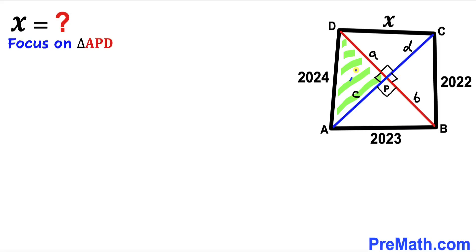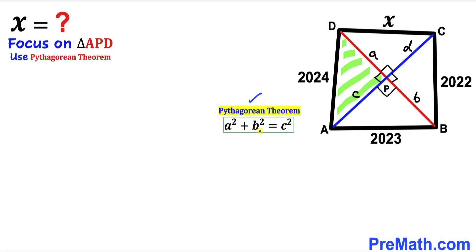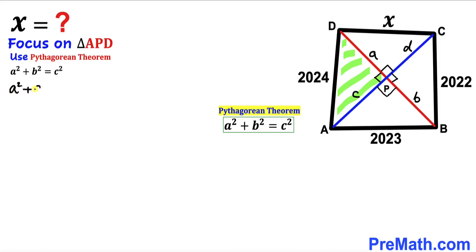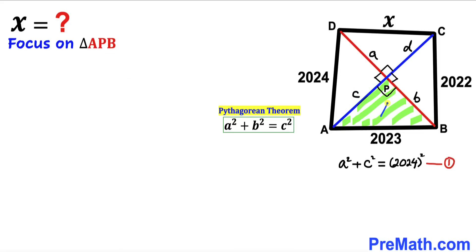Let's focus on right triangle APD and apply the Pythagorean theorem. Our hypotenuse is 2024 and the two legs are a and c. Filling in the formula gives us a² + c² = 2024². I'll label this equation number one.